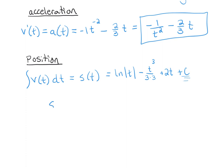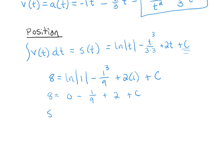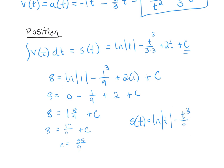Plugging in: eight equals natural log of one — which is zero — minus one to the third over nine plus two times one plus C. Solving: eight equals zero minus one-ninth plus two plus C, giving eight equals seventeen-ninths plus C, so C equals fifty-five ninths. The official position function is the natural log of the absolute value of t minus t to the third over nine plus two t plus fifty-five ninths.